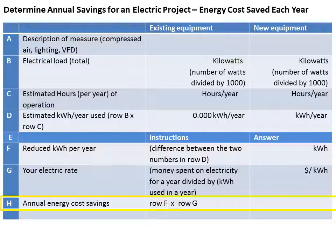The cost savings is also the cost of waiting each additional year. In other words, if you wait two years to complete a project, that is two more years you are spending more money on energy that you could be spending on other things for your business. This process is the same for a gas project, except therms are used instead of watts. The formula for calculating annual savings for a gas project is on the formulas to calculate payback guide located on the webpage where you access this course.